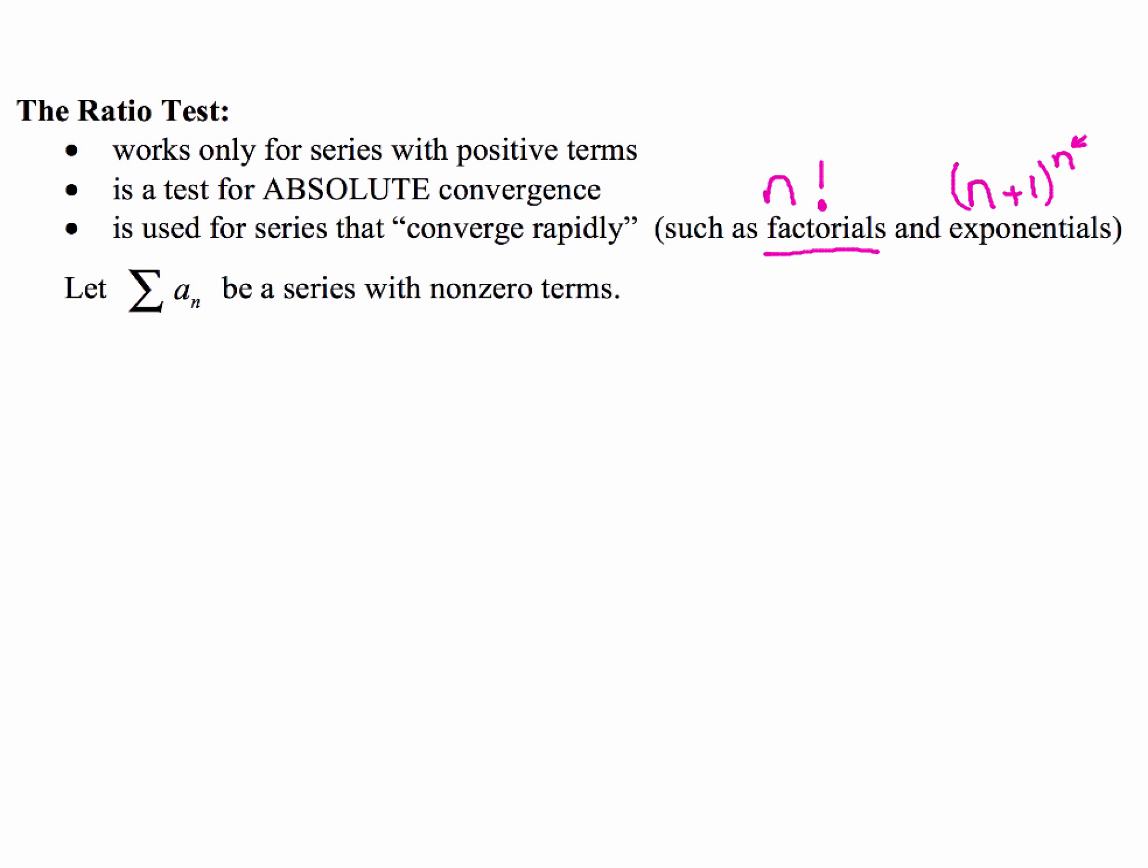So let this series have non-zero terms, and it's going to converge absolutely if when we take the limit, the absolute value of the limit as n goes to infinity, if it's less than 1. Now this fancy notation right here, this a sub n plus 1, that's always going to be your next term.